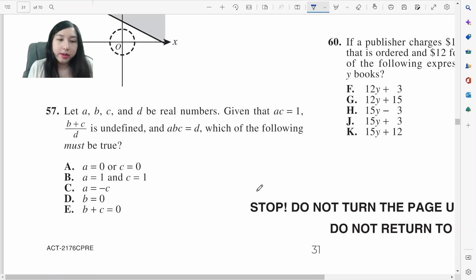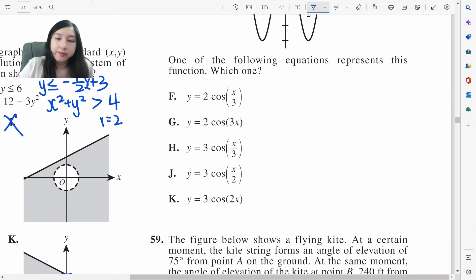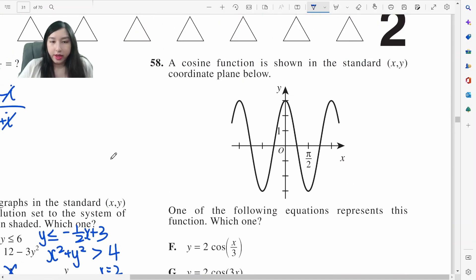ac equals 1. b plus c over d is undefined. abc equals d, which would fully must be true. b plus c over d is undefined. So for something to be undefined, the denominator must be 0. So abc must equal 0. Let's look at option A first. If a equals 0 or c equals 0, that could work. Oh, but ac equals 1. So a and c cannot be 0. That means b must be 0.